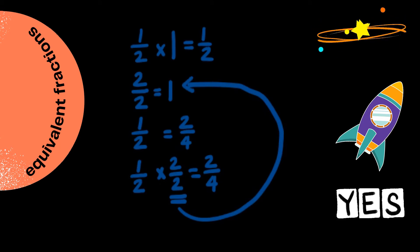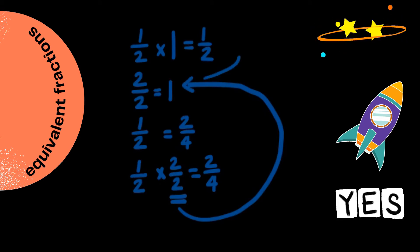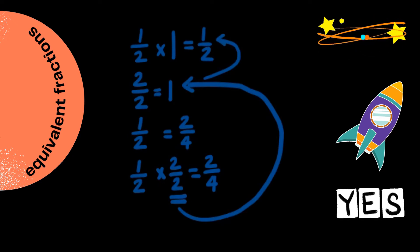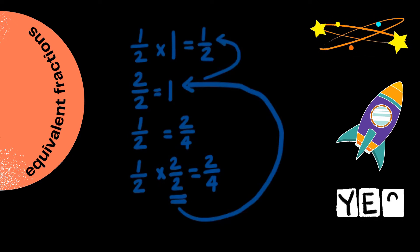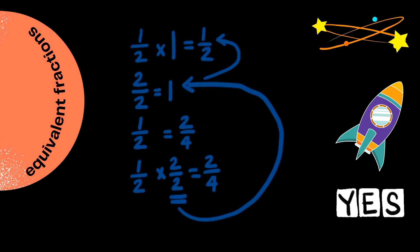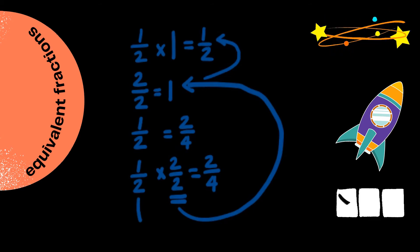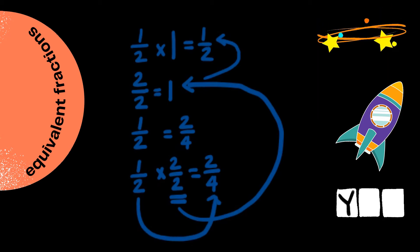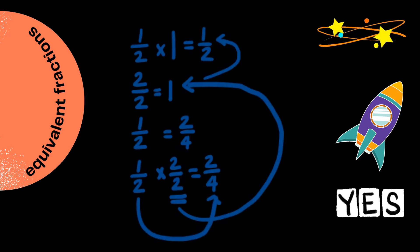Because we are multiplying a half with one, it means that the value of this fraction remains the same, even though the numerator and the denominator of two over four have larger values or larger numbers.